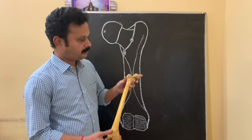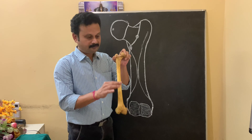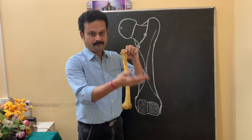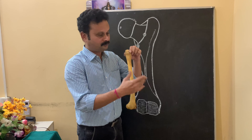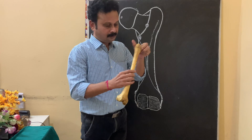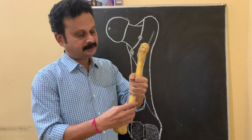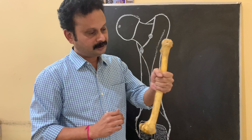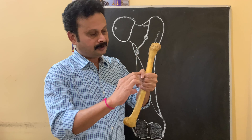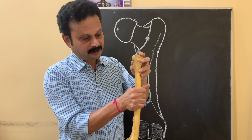Let us now discuss about the shaft. This is a shaft which is bent forwards, that is it is convex forwards. This shaft consists of three surfaces and three borders in the middle. Let us study it in the upper one third, middle one third, and lower one third. First I am talking about the middle one third.